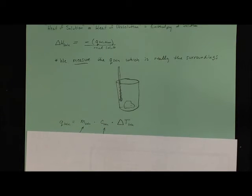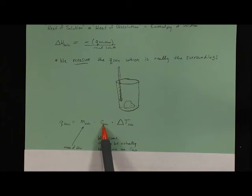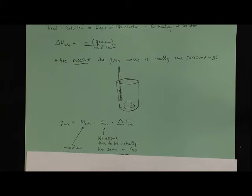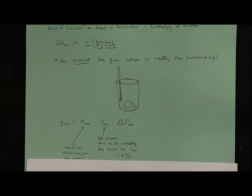A couple of things to keep in mind with this equation, the Q equals MCAT equation: we're going to assume the specific heat capacity is essentially the same as pure water, and usually the problem says that. Pure water would be 4.18 under normal conditions, joules per gram per degree Celsius. So that's what you're going to end up using for your specific heat capacity of the solution.